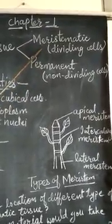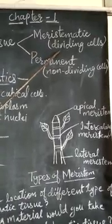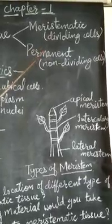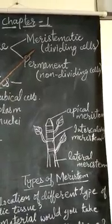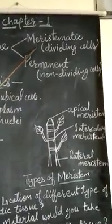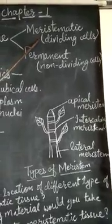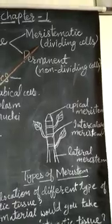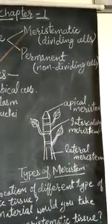Meristematic tissue comprises continuously dividing cells, whereas permanent tissue comprises non-dividing cells. Meristematic tissue is present in all the growing regions of a plant, such as tip of root, stems and branches. Its main function is to make plants grow.